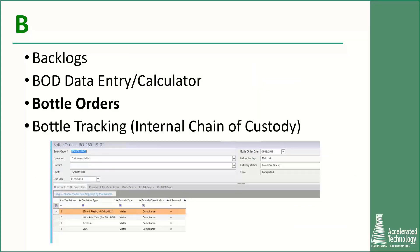On to B, where we start with backlogs of all sorts for all departments. If you do BOD, built-in calculators can help streamline your process. But did you know that with a LIMS you can create a quote? From the quote you can generate bottle orders, produce bottle labels, and track bottle inventory. Once these bottles come back to the lab, you can track them through the lab individually with internal chain of custody capabilities.